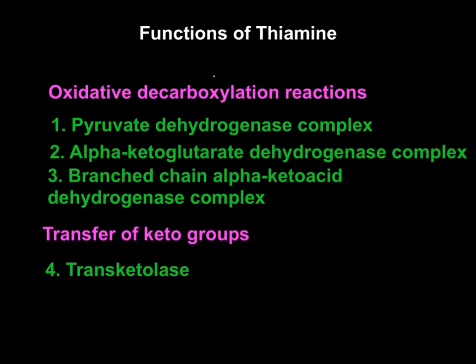The active form of thiamine in our body is thiamine pyrophosphate. This thiamine pyrophosphate is used in two main types of reactions in our body. The functions of thiamine can be broadly classified into oxidative decarboxylation reactions and the transfer of keto groups reactions.